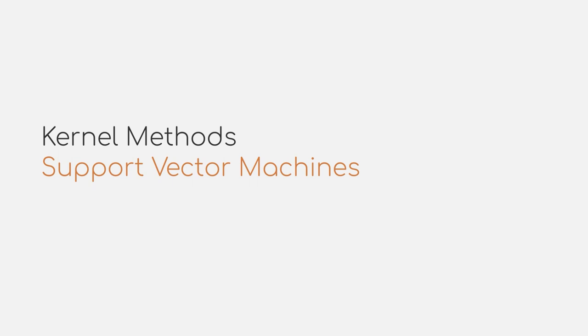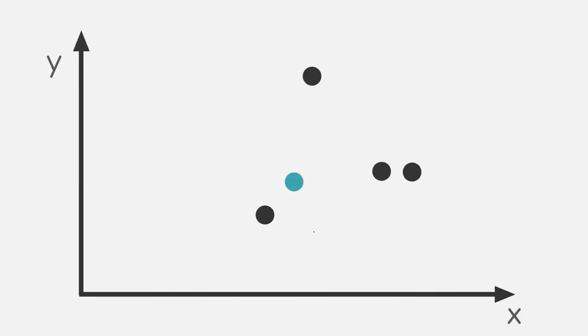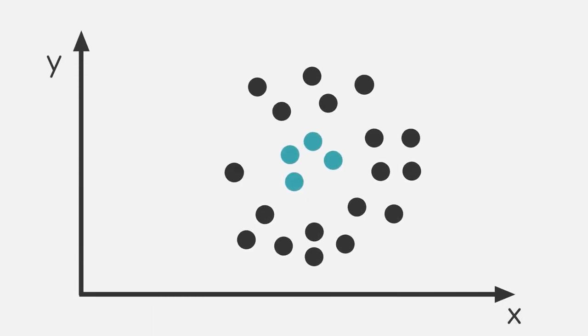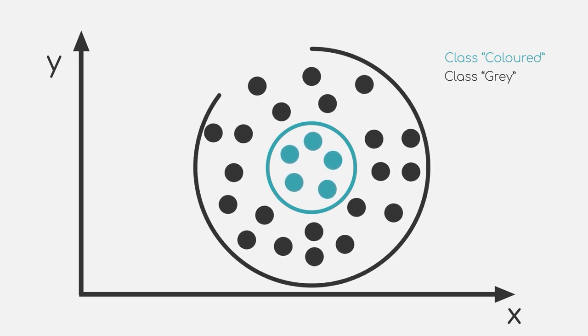In this video, we will start off by giving an intuitive overview of what kernels actually are. So let's jump right into it. Consider a dataset with two different classes as labels. Let's say we have colored points and gray points. The dataset looks like two concentric circles, where the inner circle is the class of colored points and the outer circle the class of gray points.